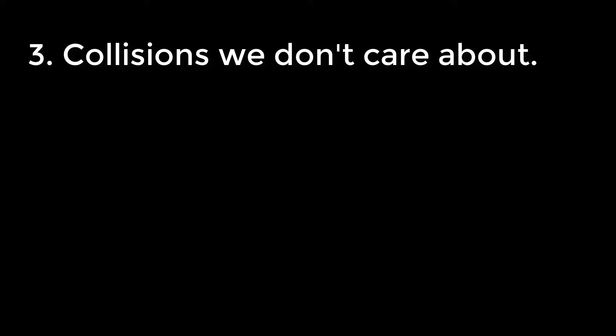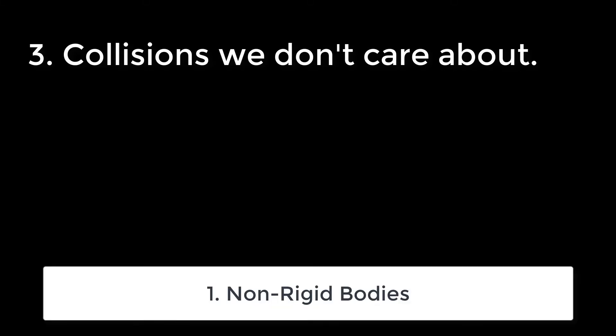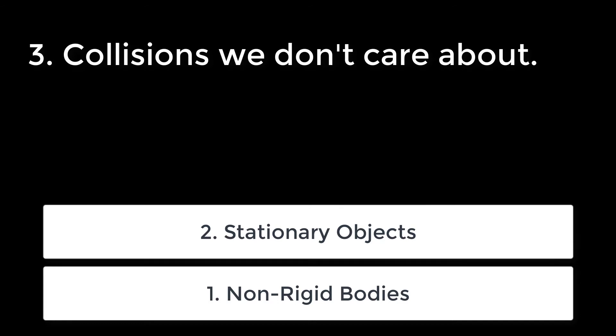The next class of optimization is pruning out collisions that we just don't care about. There are four tiers of objects. On the bottom you have non-rigid bodies — these are bodies that you still want to detect collisions when they happen, but they don't interact with physical objects. For example, fire: a character walks into fire, you want to know that so you can reduce their health, but the fire isn't going to bounce off of them. Chances are you probably don't need to test collisions between non-rigid bodies. Next up is stationary objects — the ground, walls, obstacles, and other things that don't move. There's really no need to test stationary objects against other stationary objects, so just rule out that entire branch of collisions. Also, there's typically never going to be a point of testing stationary objects against non-rigid bodies.